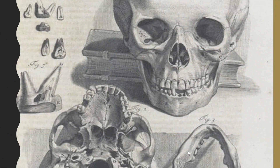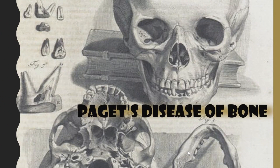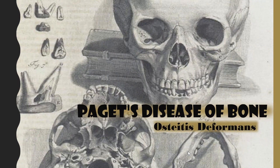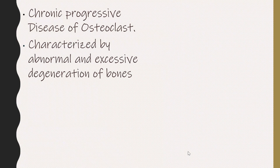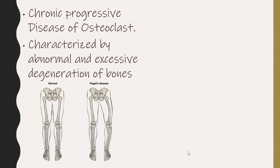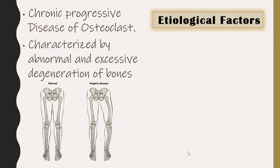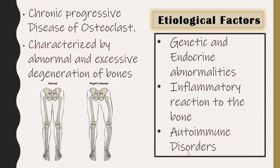Welcome to another video on Dentist Hub. Today's topic is Paget's disease of bone, an important question asked in oral pathology. Paget's disease of bone is also called Osteitis Deformans. It is a chronic progressive disease of osteoclasts, characterized by abnormal and excessive degeneration of bones. Etiological factors include genetic and endocrine abnormalities, inflammatory reaction to bone, or autoimmune disorders.